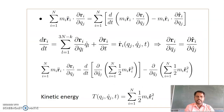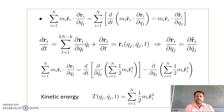Now let's consider the second term, which is M_i R_i double dot into (∂R_i / ∂Q_J). We know that the differentiation of a product rule is given by d(UV) equals U V' plus V U'. Using this principle and rearranging terms, this expression can be written as d/dt of (M_i R_i dot into ∂R_i / ∂Q_J) minus M_i R_i dot times (∂R_i dot / ∂Q_J).